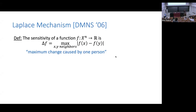The notion of sensitivity calibrates that, and it depends on what you're trying to do with the data. Are you trying to learn something very aggregate — a mean over a large population — or are you trying to count how many people named Bob Smith live at this address? Obviously these are very different. The sensitivity of a function is effectively the maximum change that can be caused by one person's data — formally, the maximum absolute change in the function's value caused by changing one person's data.